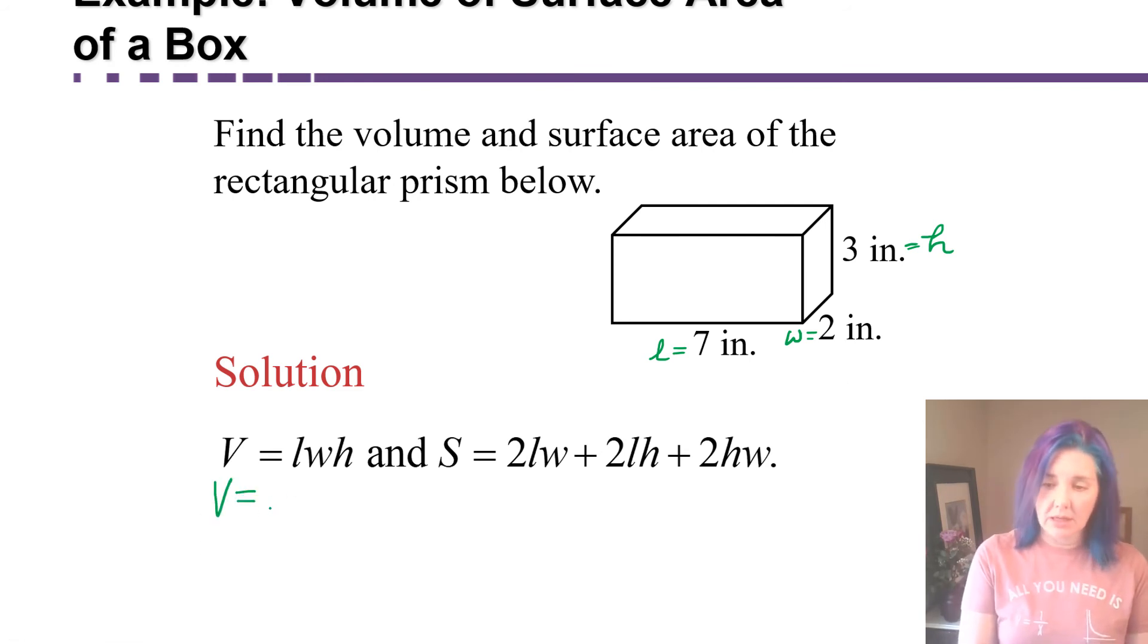Let's look for the volume first. So volume is length, which is seven inches, times width, which is two inches, times height, which is three inches. When you multiply inch times inch times inch, you get inches cubed, cubic inches. And seven times two times three is going to be 42 cubic inches. That's the number of little cubes that would fit inside or fill that box.